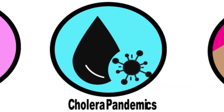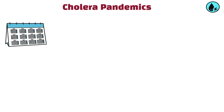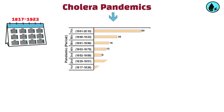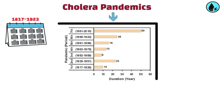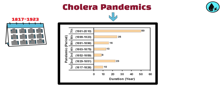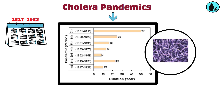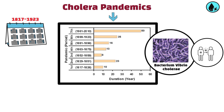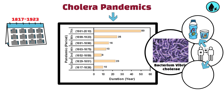Cholera pandemics, 1817 to 1923. Cholera pandemics have occurred in seven distinct waves since the early 19th century. Caused by the bacterium Vibrio cholerae, cholera is transmitted through contaminated water or food.